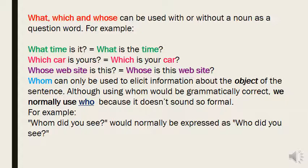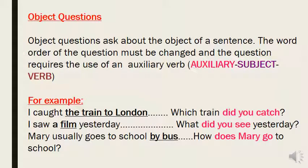These can be used with or without a noun. WHOM can only be used to elicit information about the object of the sentence. Although using 'whom' would be grammatically correct, we normally use 'who' because it doesn't sound so formal. So 'whom did you see' would normally be expressed as 'who did you see' — both are correct. For object questions, the word order must be changed and requires an auxiliary verb. For example: I caught the train to London — which train did you catch? I saw a film yesterday — what did you see yesterday? Mary usually goes to school by bus — how does Mary go to school?